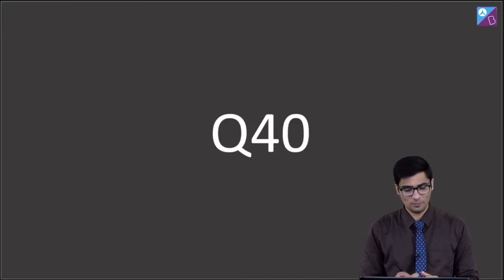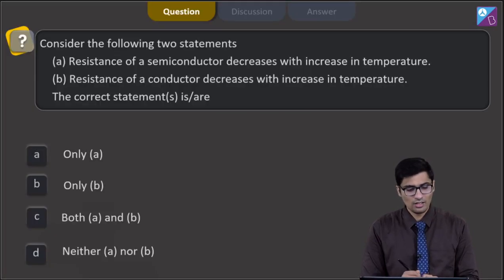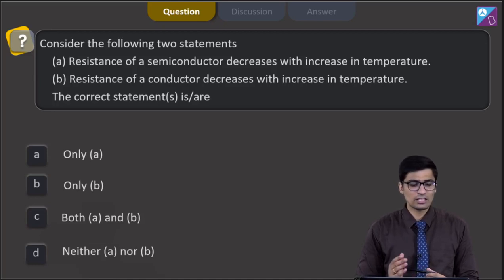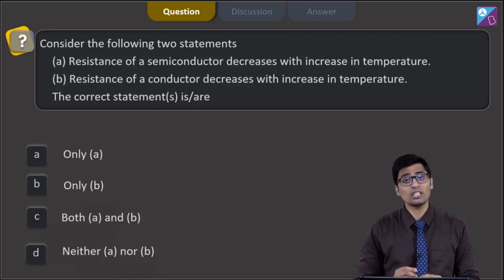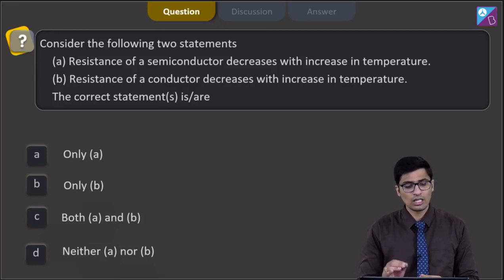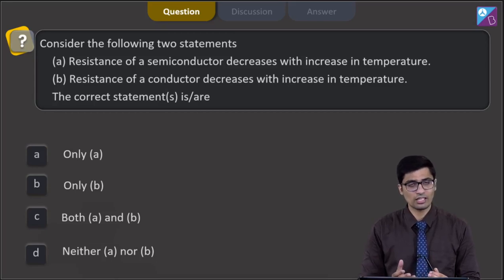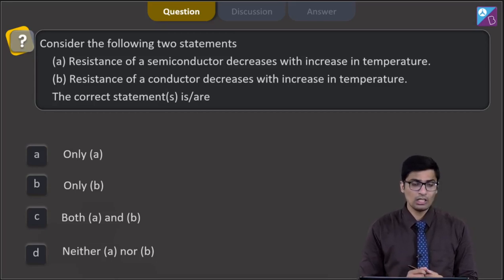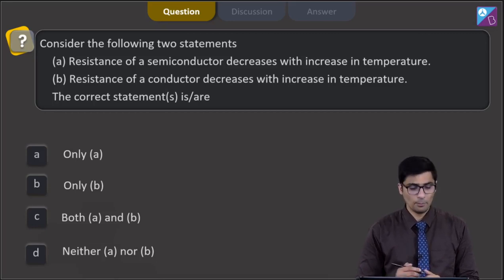Question 40. Consider the following two statements. Statement A: resistance of a semiconductor decreases with increase in temperature. Statement B: resistance of a conductor decreases with increase in temperature. We have to find the correct statement. The four options are: only A, only B, both A and B, or neither A nor B.